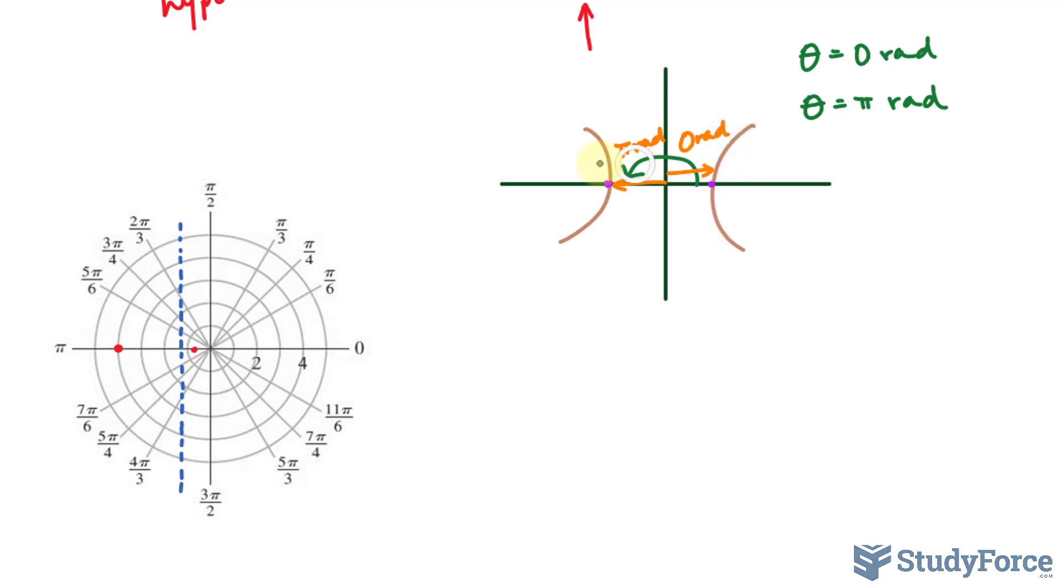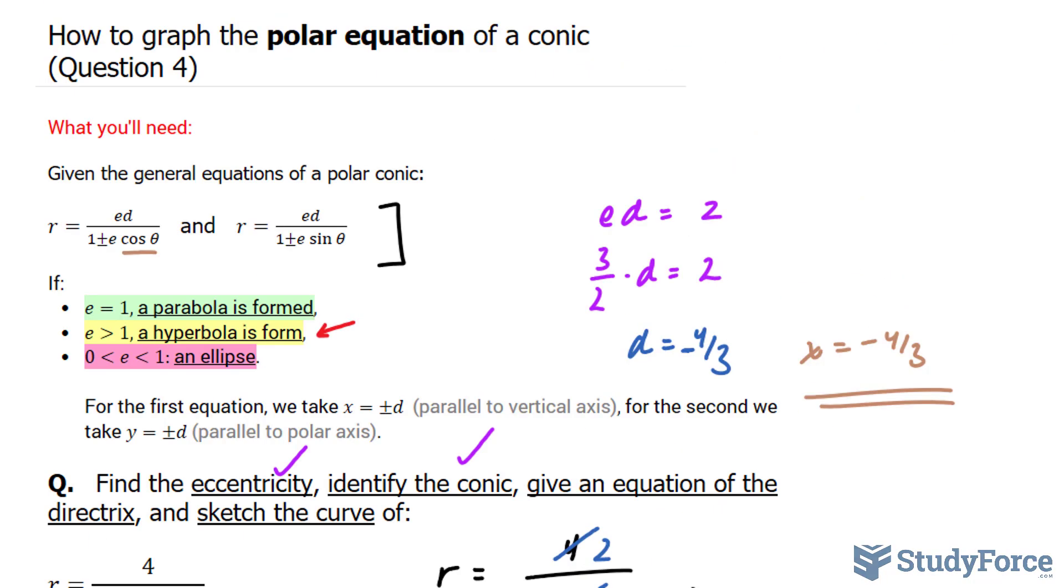Now we know hyperbolas behave like this, where the curves are opposite of each other. So from here, since it's just a sketch, we don't have to be super accurate. All we have to do is draw two curves going in opposite directions. And there you have it. That is how to graph a polar equation of a conic.